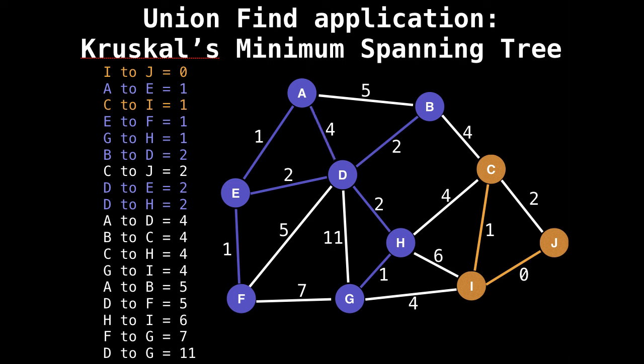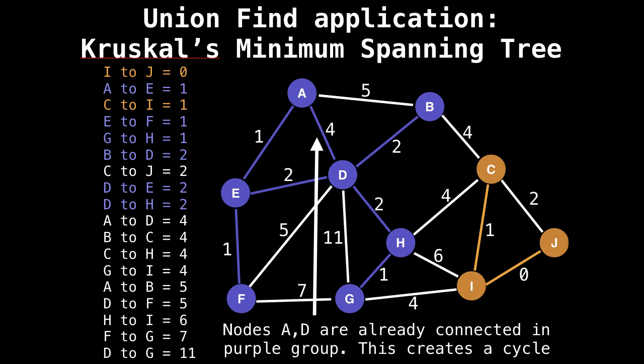Next up, we want to add edge A to D. But A to D already belong to the same group. So that would create a cycle. So we don't want to include that edge. Skip it.